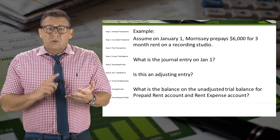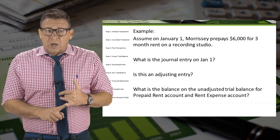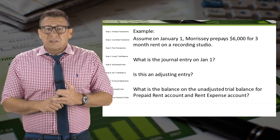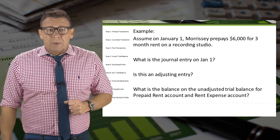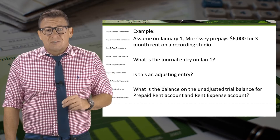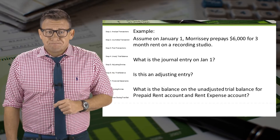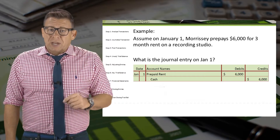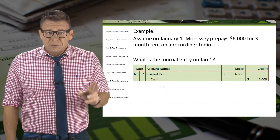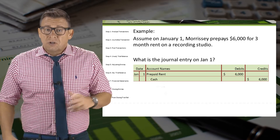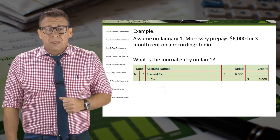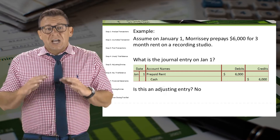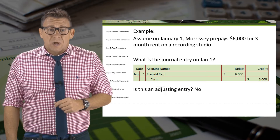Let's answer some questions. What's the journal entry on January 1? Is this an adjusting entry? The journal entry on January 1 is a debit to the asset account prepaid rent and a credit to the asset account cash for $6,000. This is not an adjusting entry because there is an underlying transaction that happened on January 1.